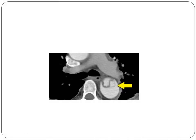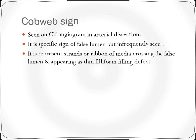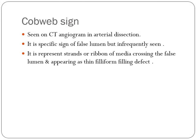The comb sign is seen on CT angiogram in arterial dissection. It is a specific sign of the false lumen, though infrequently seen. It represents strands or ribbons of media crossing the false lumen, appearing as thin filiform defects.